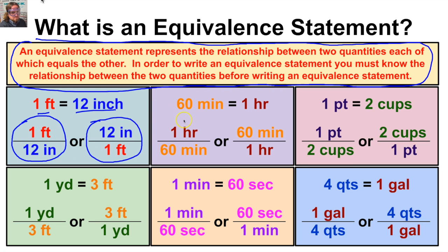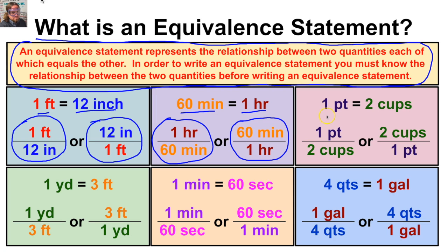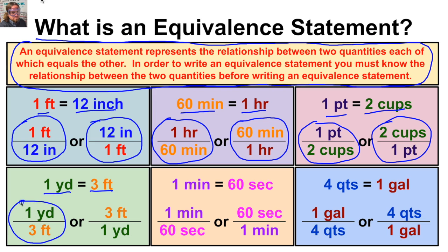We know that 60 minutes equals one hour. We can write this equivalence statement as a fraction: one hour over 60 minutes, or 60 minutes over one hour. One pint equals two cups, which we can express as one pint over two cups or two cups over one pint. One yard equals three feet, which we can express as one yard over three feet or three feet over one yard.